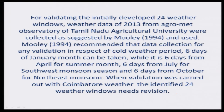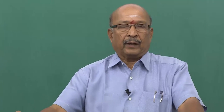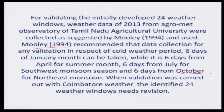The 54 weather windows now selected were validated with block-level data. In Tamil Nadu, automatic weather stations have been established in 385 blocks. From selected blocks, we collected weather data as per the recommendation given by Mooli 1994. Six stages were selected: January for the cold weather period, April for summer months, July for the south-west monsoon season, and October for the north-east monsoon season. These six-stage weather data were validated with our 54 weather windows, and we found that the selected 54 weather windows were good enough to accommodate all seasonal influences occurring in Tamil Nadu. Then we stopped with that.